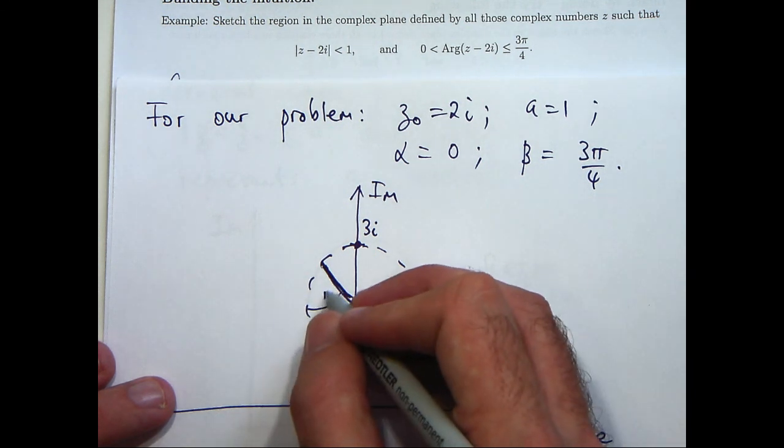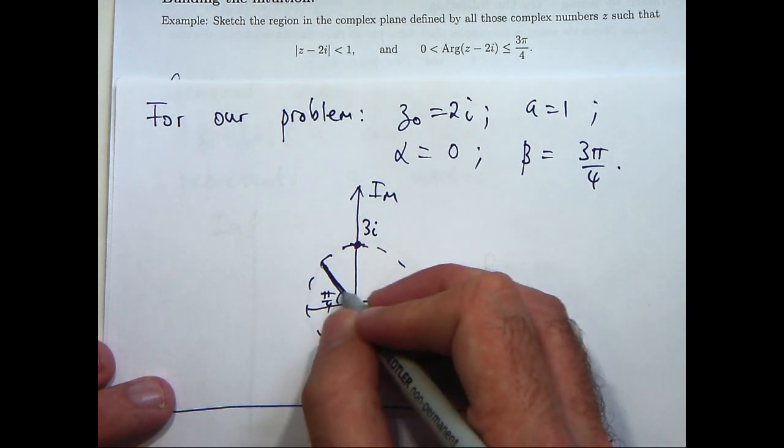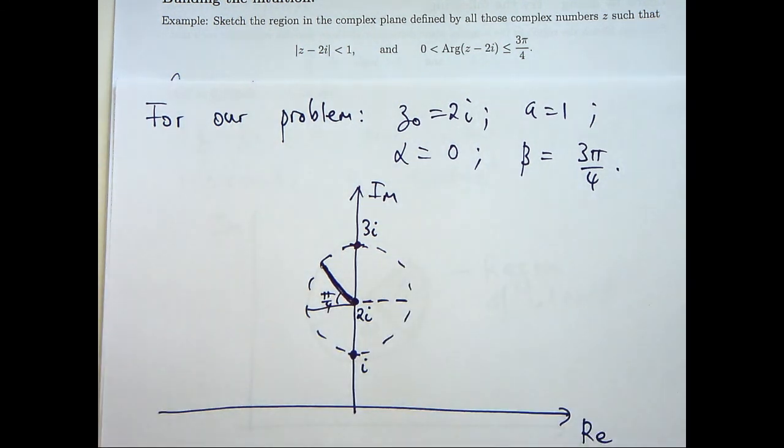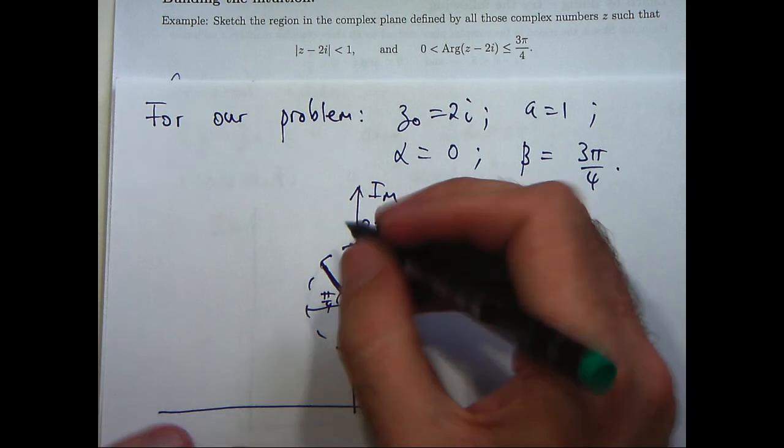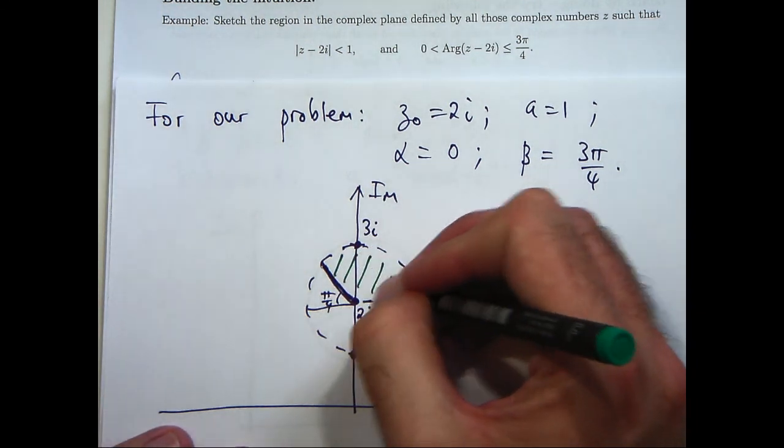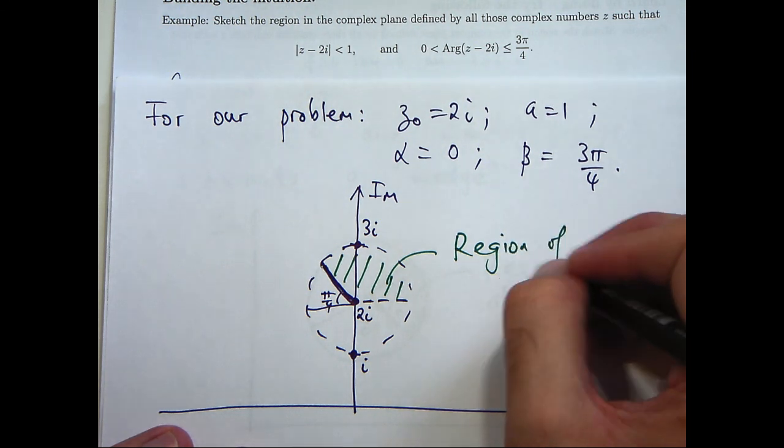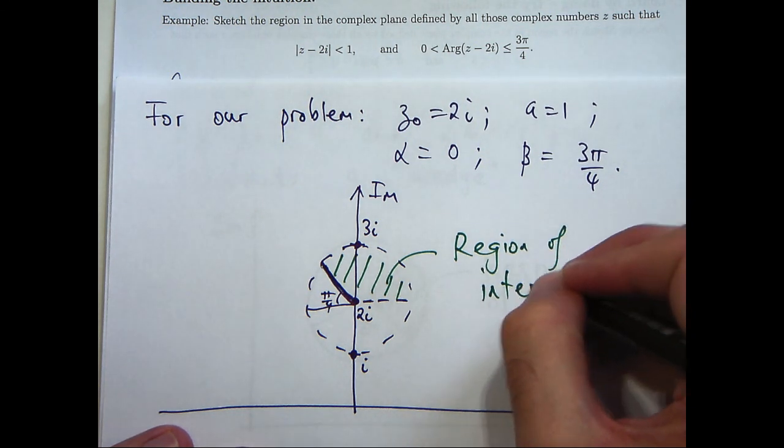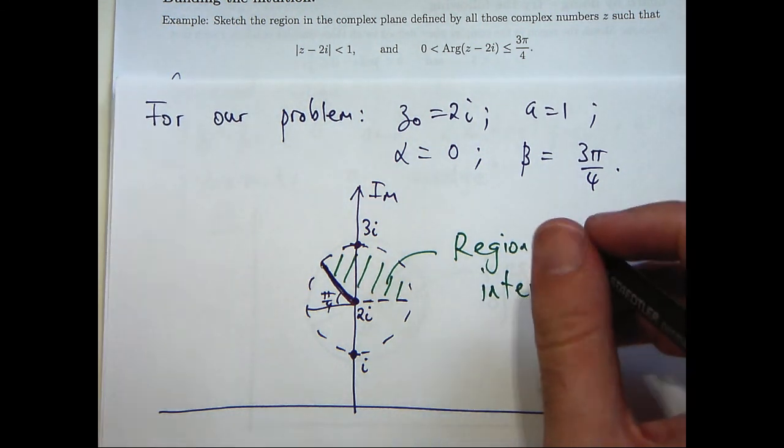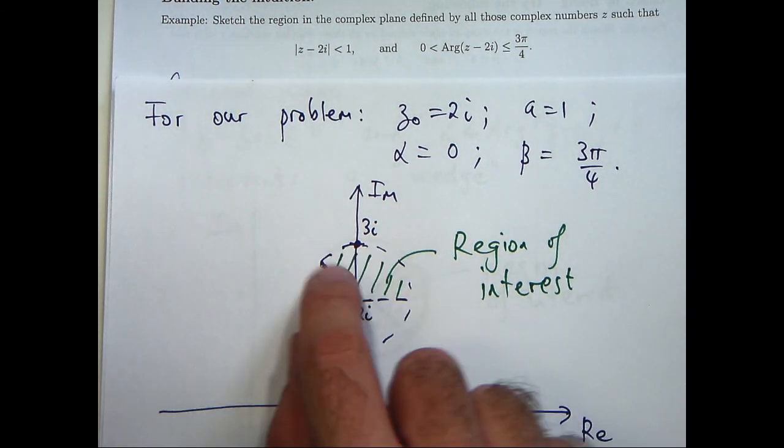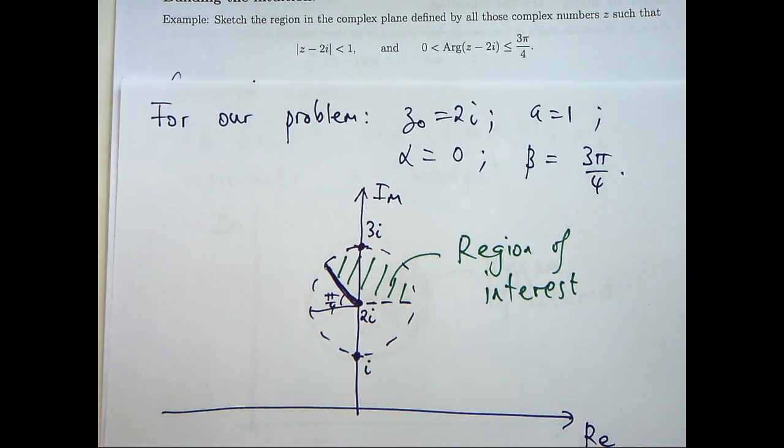So basically I want to show you that there's an angle of pi on 4 radians down here. So where's our region? Well, it'll be in here. So we haven't included this edge, we haven't included that edge, but we do include this edge here.